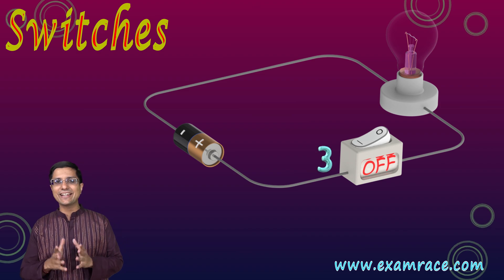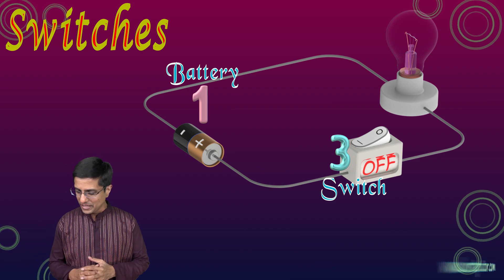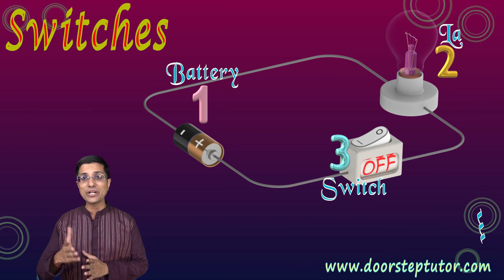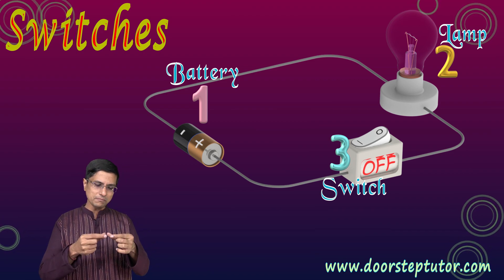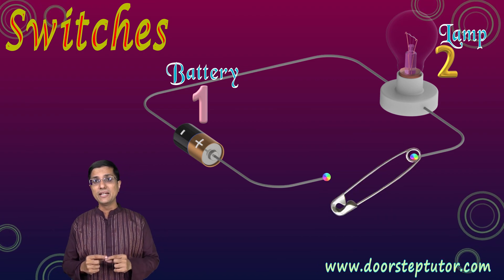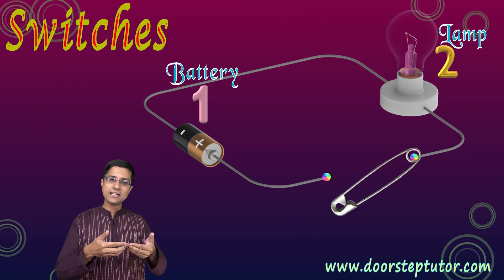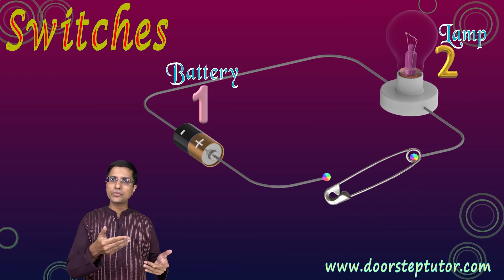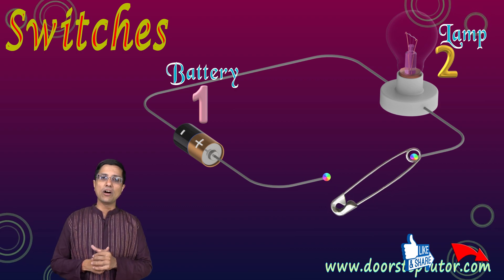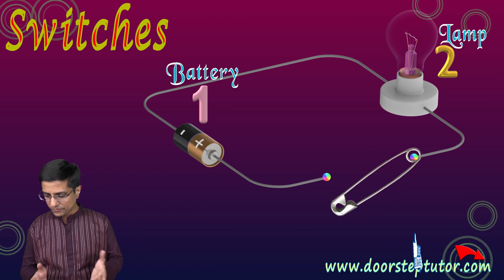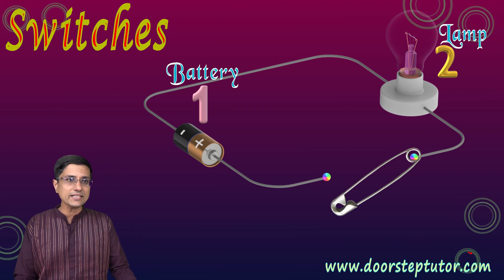More sophisticated switches are available in our households and in batteries. One such circuit and switch is also given in your book, where they use a safety pin to make or break the connection. When the safety pin makes the connection, current flows and the bulb lights up. If the safety pin is turned to one side, the connection is broken, and the bulb does not light anymore because there is no path for the electrons to flow — the circuit is broken.